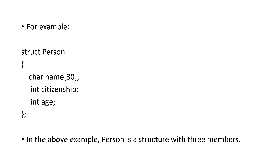For example, the struct keyword and the name of the structure is 'person'. These are the elements we are including: name is there, citizenship is there, age is there. Even the data types are different — name is a char array, citizenship is int, and age is also int. Because of these different data types, we call it a structure.